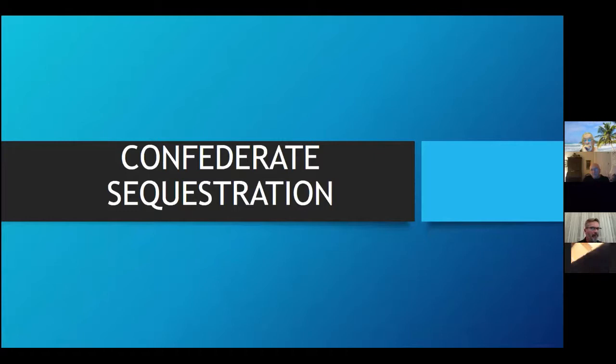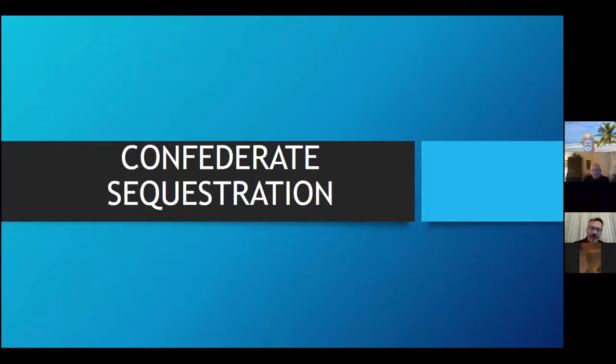In terms of context, my talk tonight really fits into two categories. First off, and this is conveniently alliterative, this is a discussion that deals with confiscation, coercion, and corruption on the Confederate home fronts. I think as I go through my talk, you'll begin to see the profound potential for corruption and how that corruption actually played out over the course of the Civil War.